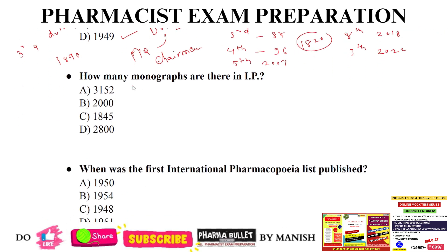Next question: how many monographs are there in IP? The correct answer is 3152, option A. The number of newly added monographs in Indian Pharmacopeia 2022 — how many monographs are newly added? The correct answer is 92 monographs are newly added in IP 2022.